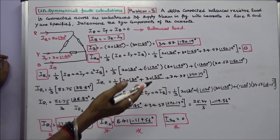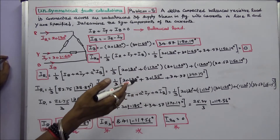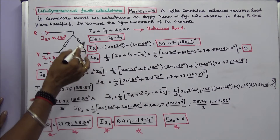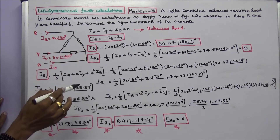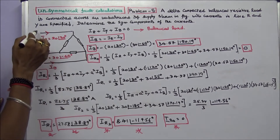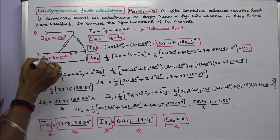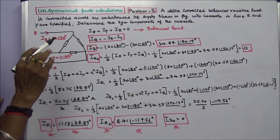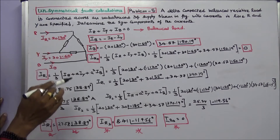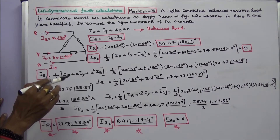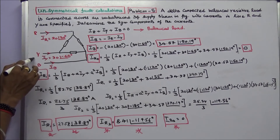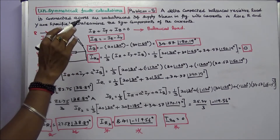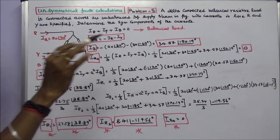This allows you to work out two problems. The first problem is: a delta-connected balanced resistive load is connected across an unbalanced three-phase supply, shown in figure, with the currents in line R and Y specified. Determine the symmetrical components of the currents.